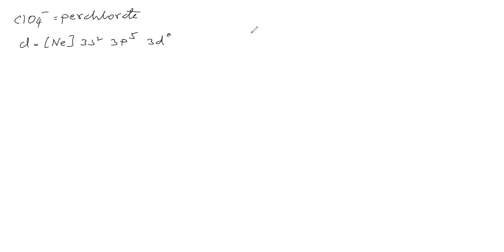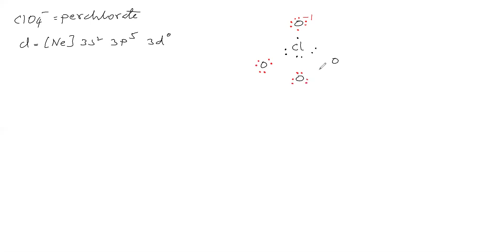Chlorine's valency shell contains 7 electrons since it comes under group 7A. There are 4 oxygen atoms. The net charge is minus 1, which is given to one oxygen, making that O⁻ with 7 electrons in its valency shell. The other three oxygens each have 6 electrons. Bonding: three double bonds and one single bond.